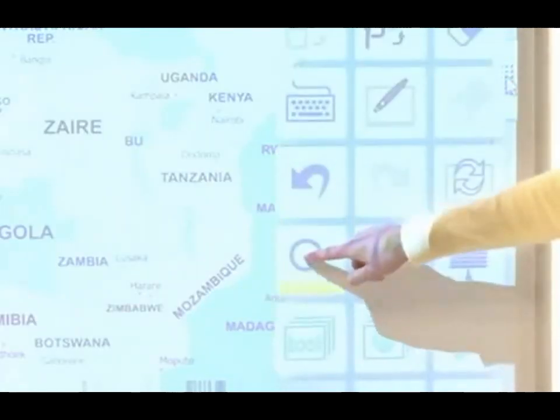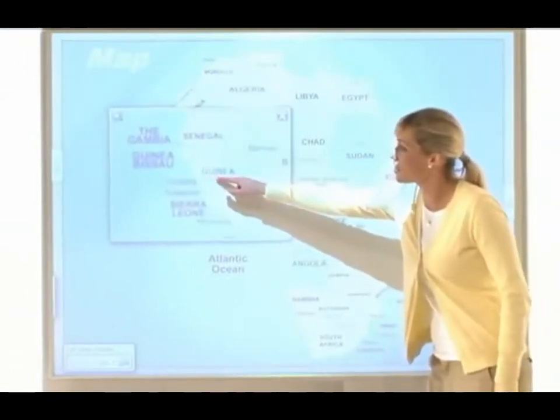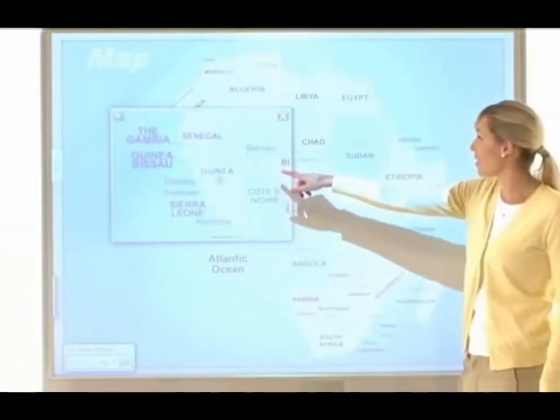The magnifier displays enlarged objects, like parts of a map. It's great for explaining detailed documents.